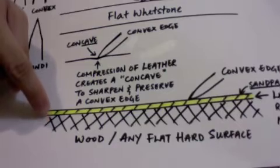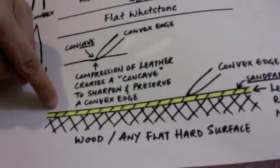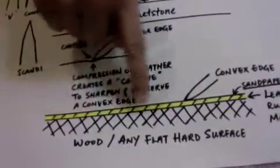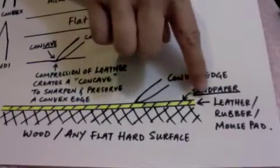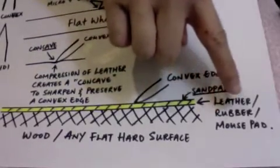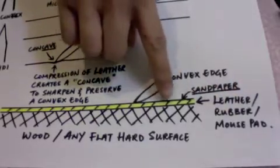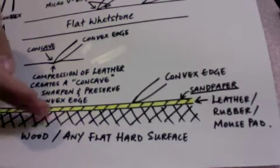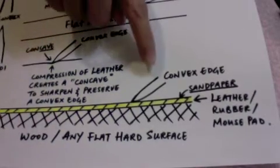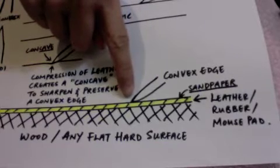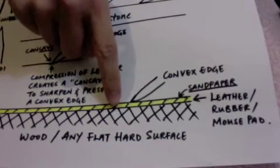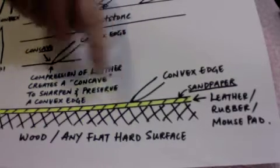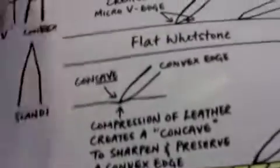You will have to use sandpaper and lay it on top. This yellow line represents it can be leather, rubber, or mouse pad, and you lay your sandpaper on top of it, and this portion here can be wood, or any flat, hard surface. By laying your convex edge on the sandpaper, which is sitting on top of the leather, or rubber, or what have you, and you sharpen away, what happens is this.